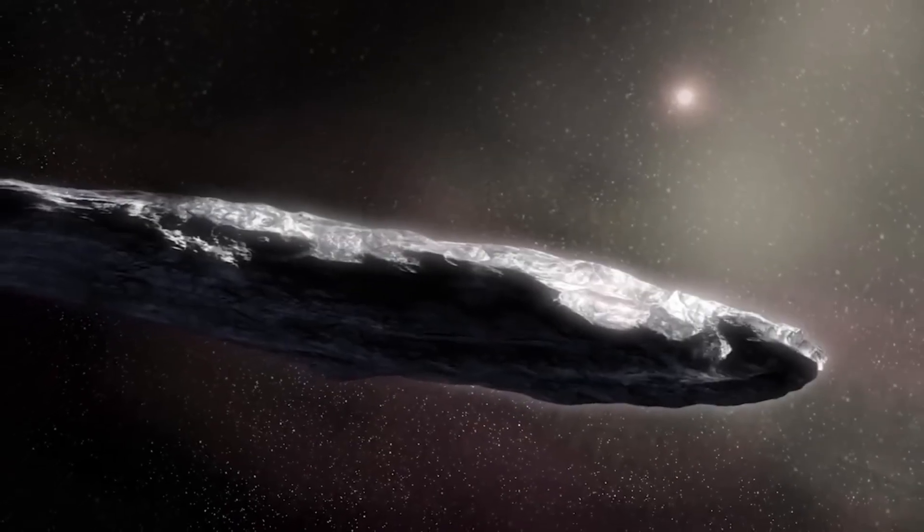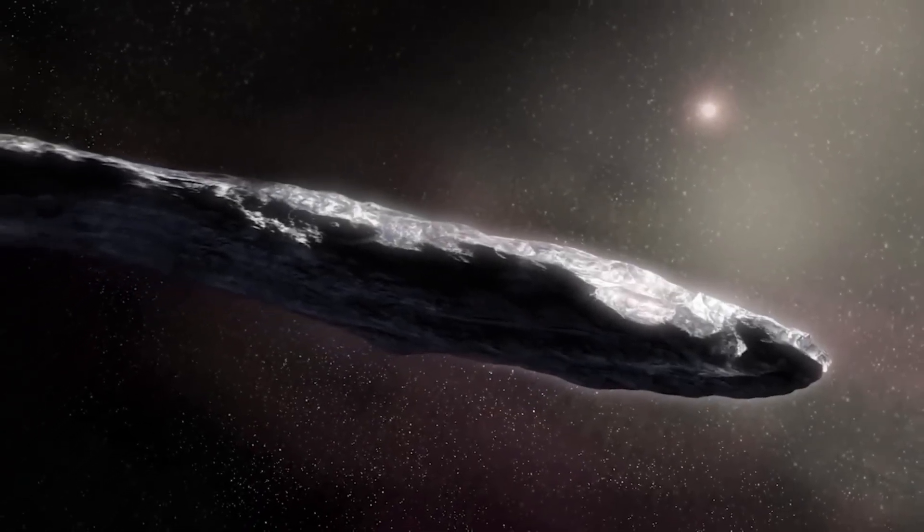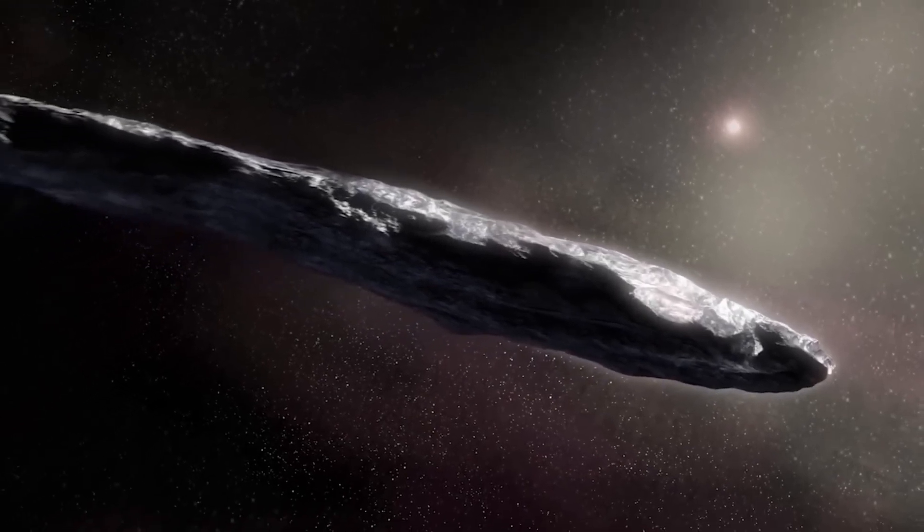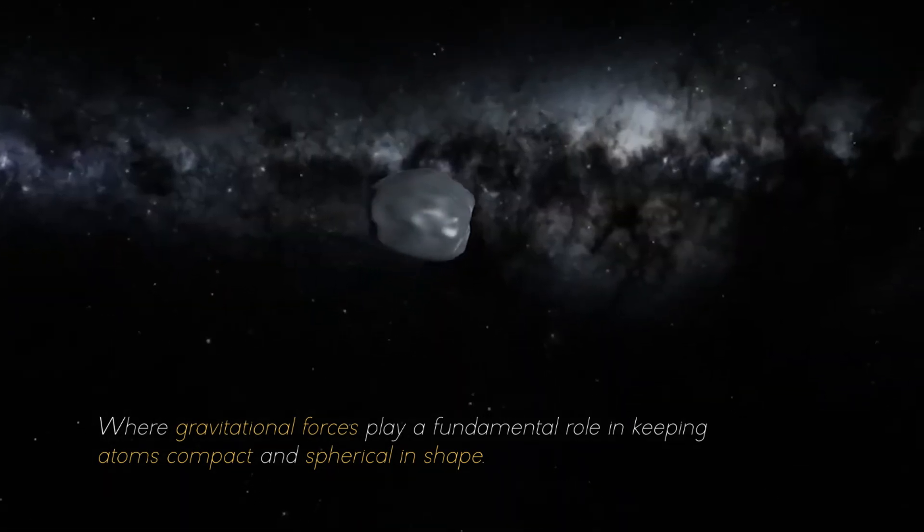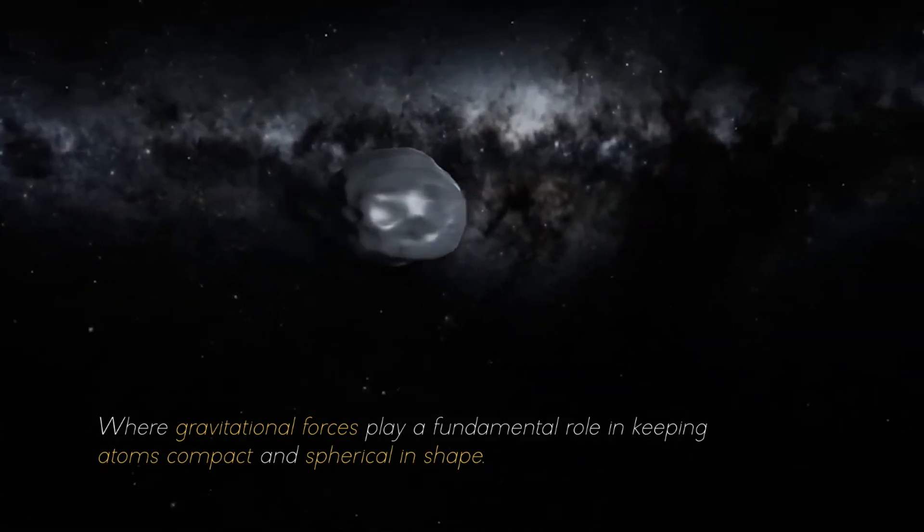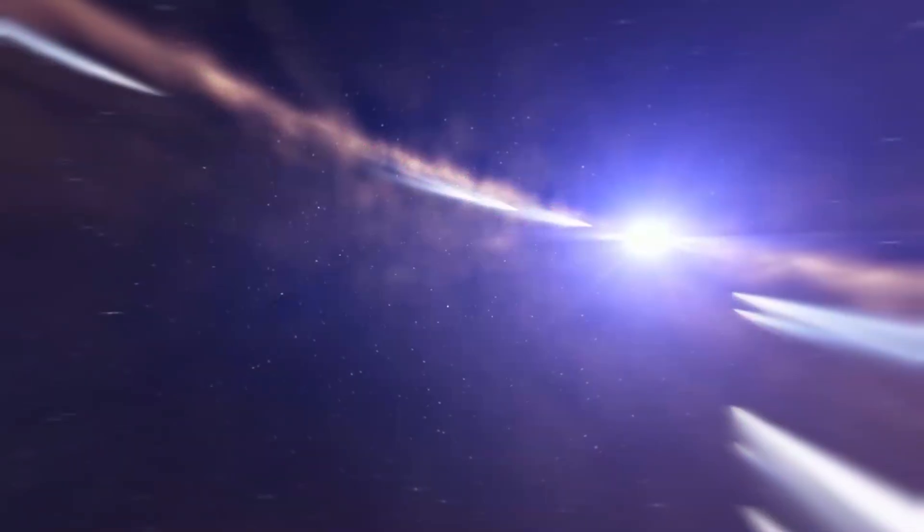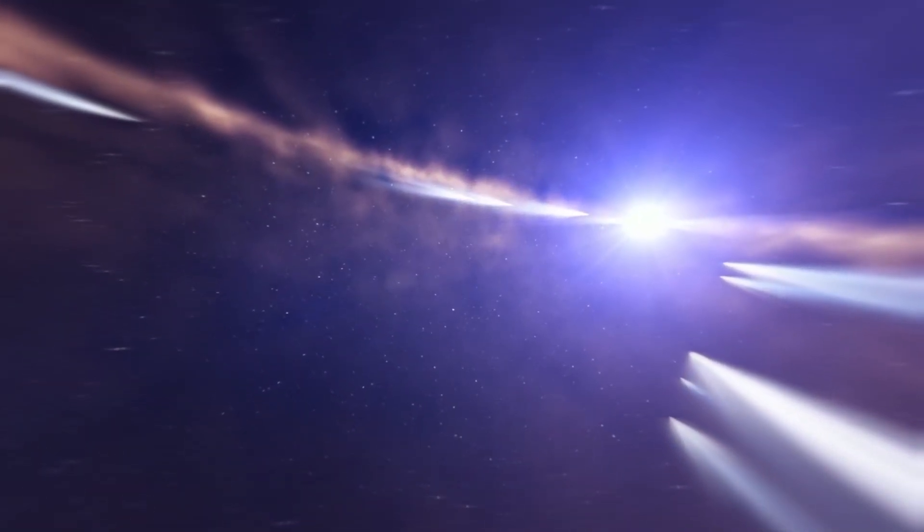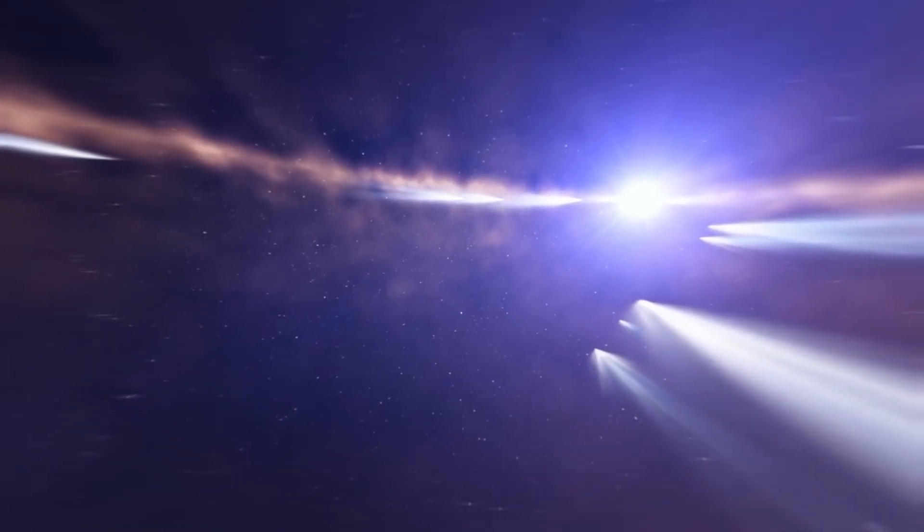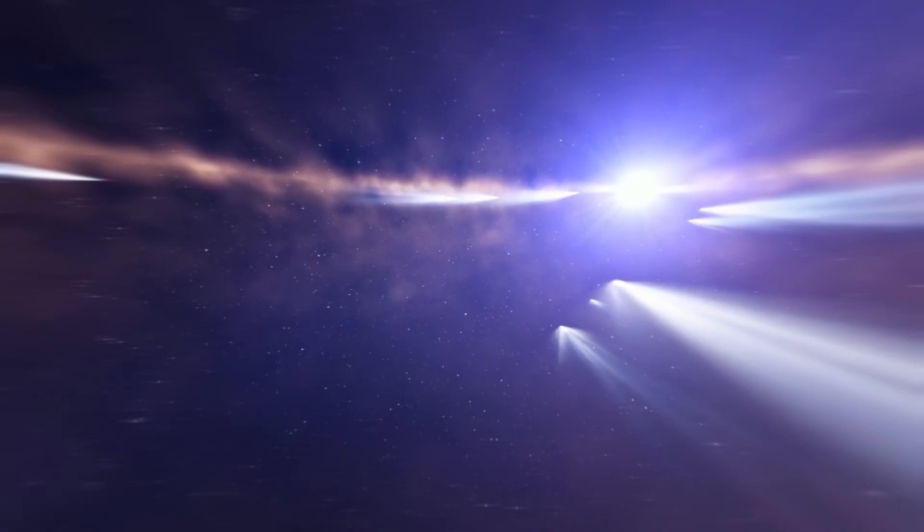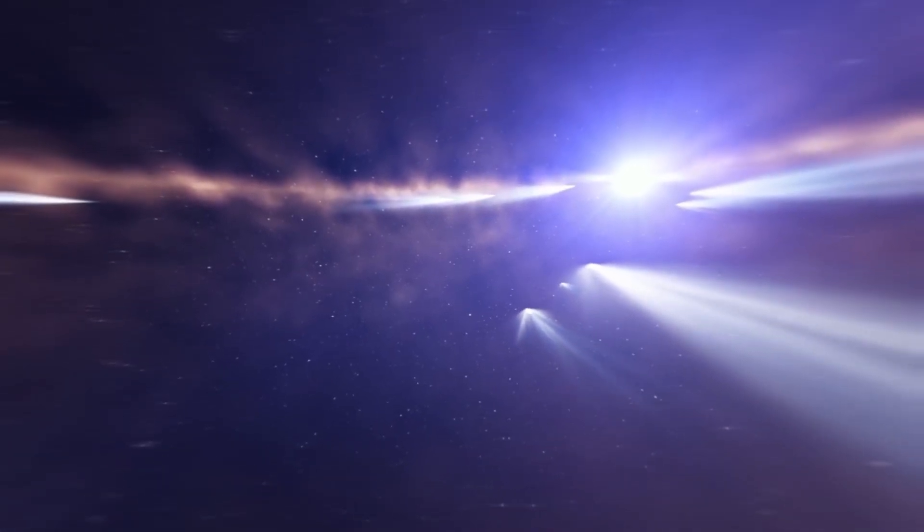The mystery surrounding the properties of Oumuamua continue to challenge our understanding of celestial objects in the vast open space, where gravitational forces play a fundamental role in keeping atoms compact and spherical in shape. In extreme conditions, characterized by residual gases and pressure, these conditions further reinforce the tendency of objects to maintain a rounded shape. These common features served as a reference.